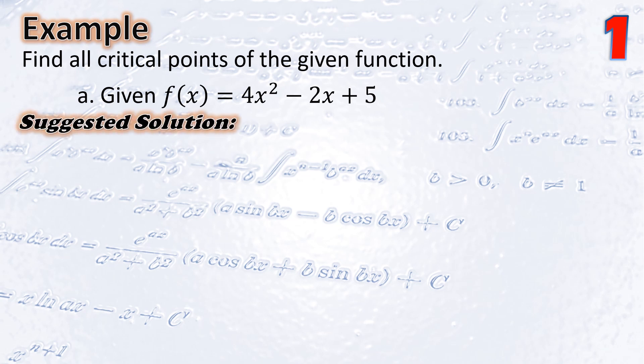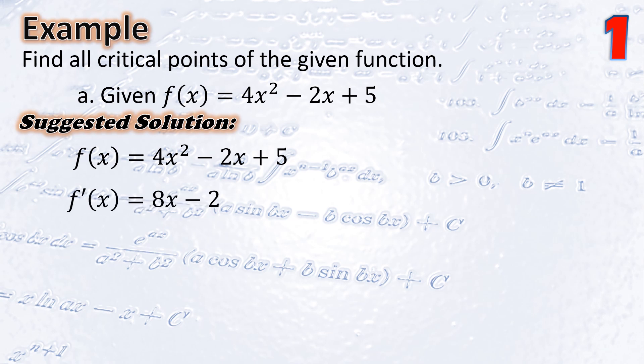Here is our suggested solution. Note that f is a differentiable function for all real values of x, so the critical point will occur when f prime of x is zero — that is, from the definition. Hence, from f(x), we find its derivative: f′(x) = 8x − 2.